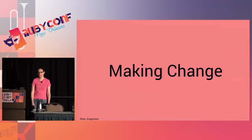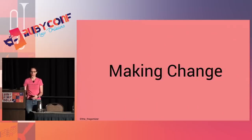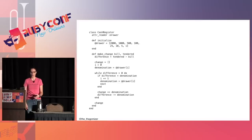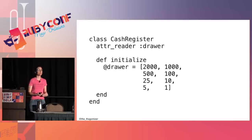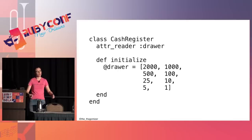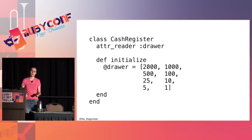On to the motivating example: the making-change algorithm OO style. I'm making a class called CashRegister. My cash register has a cash drawer containing different denominations of bills and coins: 20s, 10s, 5s, 1s, and then quarters, dimes, nickels, and pennies. In a more thorough implementation, I could also track the amounts of each denomination.